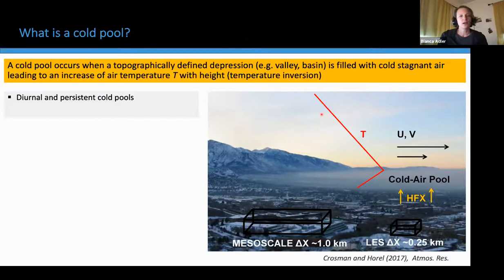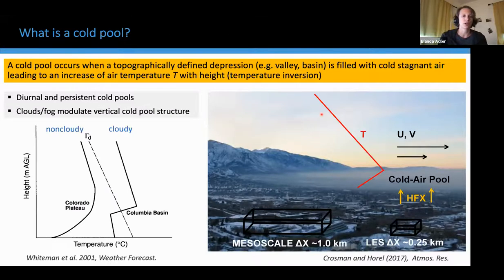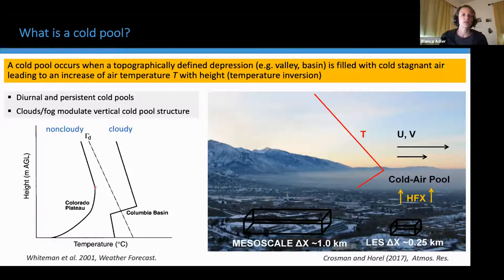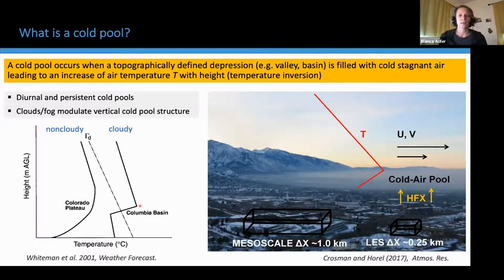Clouds and fog are very common within persistent cold pools, and they modulate the vertical cold pool structure. This is shown in these two examples. The temperature profile on the left-hand side is from a cold pool in the Colorado Plateau, which is very often non-cloudy — stability decreases smoothly with height up to the top of the cold pool. On the right-hand side, the profile is for cold pools in the Columbia River Basin, which are very often cloudy. The typical temperature structure consists of a near moist-adiabatic layer in the subcloud and cloudy layer, and then a very sharp temperature increase at cloud top.